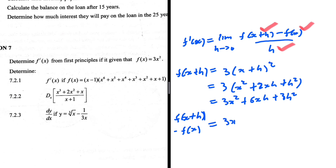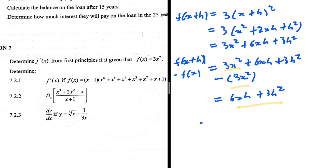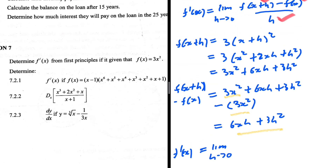Now f of x plus h minus f of x gives us 3x squared plus 6xh plus 3h squared minus 3x squared. The 3x squared terms cancel, leaving 6xh plus 3h squared. So f prime of x equals the limit as h tends to zero of 6xh plus 3h squared over h.